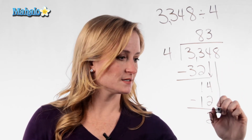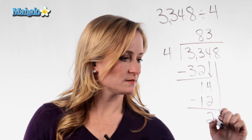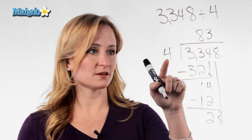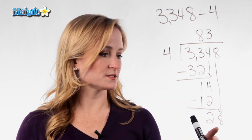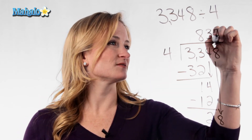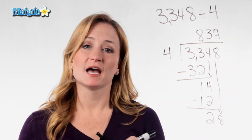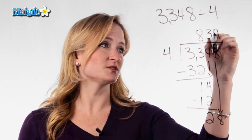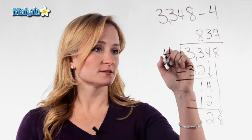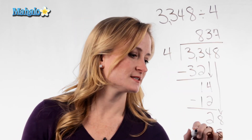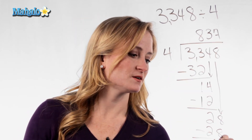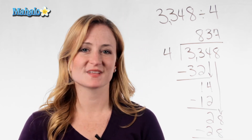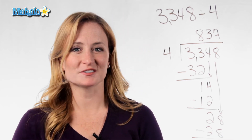Bring down this 8. So now we're thinking 4 goes into 28 seven times. And you can see if you have any remainders when you multiply. 7 times 4 is 28. And if we subtracted, we have nothing left over. And that's how you do long division.